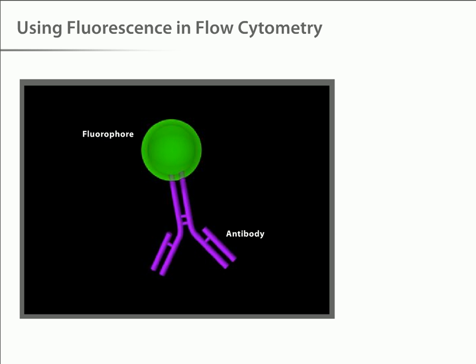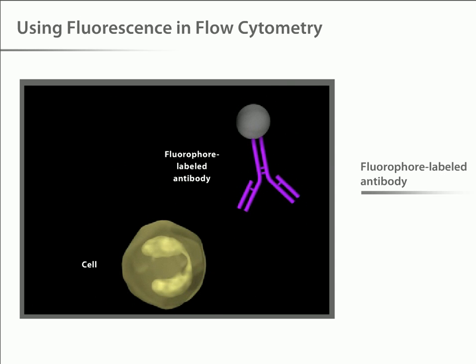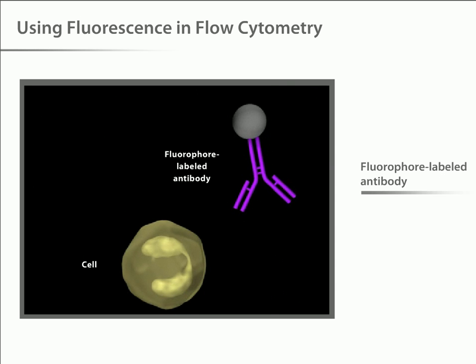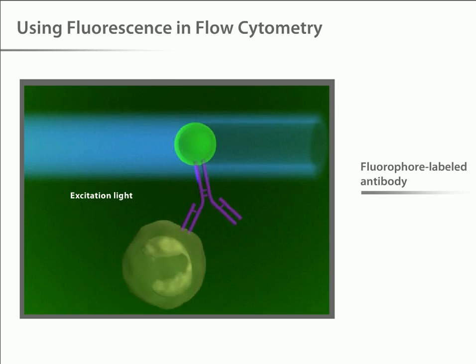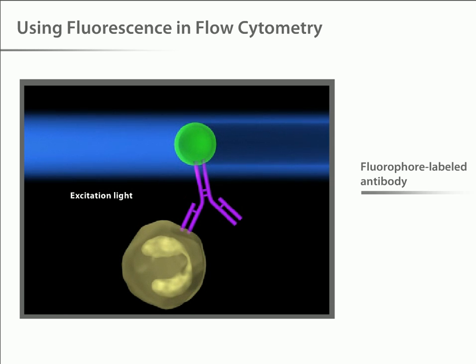One of the most common ways to study cellular characteristics using flow cytometry involves the use of fluorescent molecules such as fluorophore-labeled antibodies. In these experiments, the labeled antibody is added to the cell sample. The antibody then binds to a specific molecule on the cell surface or inside the cell. Finally, when laser light of the right wavelength strikes the fluorophore, a fluorescent signal is emitted and detected by the flow cytometer.